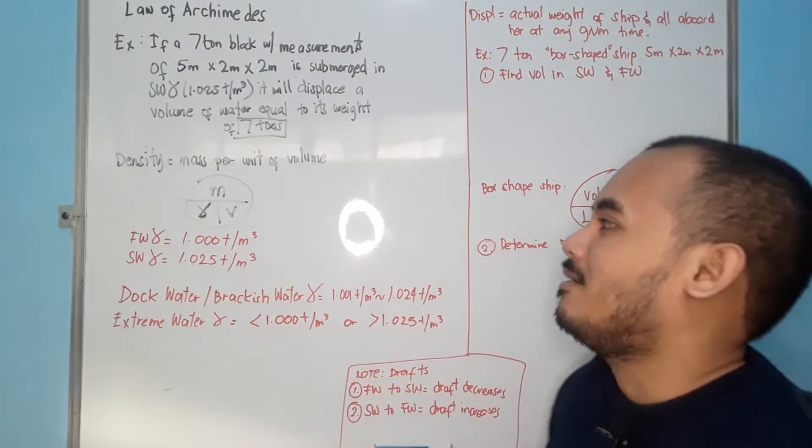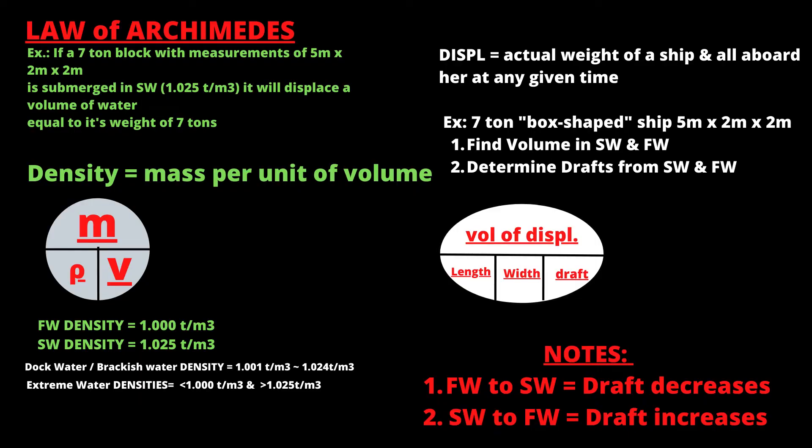Next is density. What is density? Mass per unit of volume. So, how do you compute for density? You have your mass or displacement divided by your volume. If you want to identify your volume, you go with mass divided by density. Or if you want to find your displacement or mass, density multiplied by your volume.